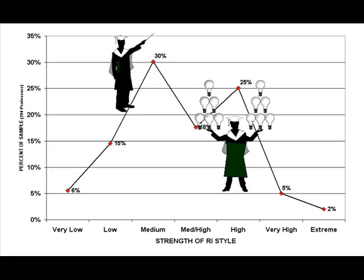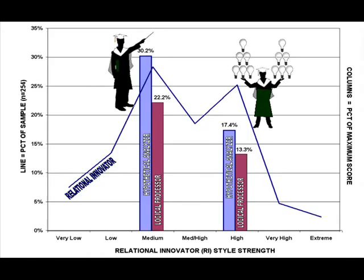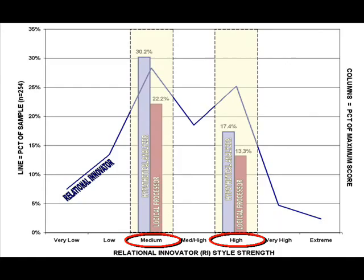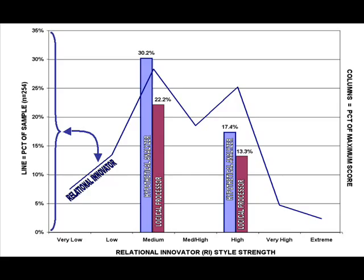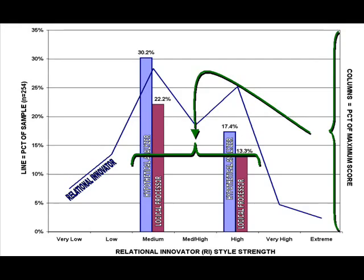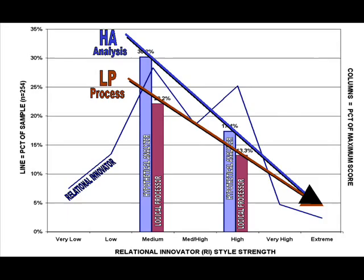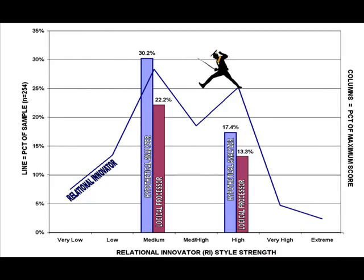Those on the lower peak are likely to offer fewer new ideas, but they bring something else to the party — a stronger analytical HA and methodical LP capability. In this graphic, those capabilities are superimposed on the RI double peak. The HA and LP columns are shown only for the two peak RI levels. The scale for the RI line is on the left and refers to the percentage of sampled professors holding a particular RI strength. The scale on the right refers to the average strength of the LP and HA styles held by people occupying positions on the two RI peaks.